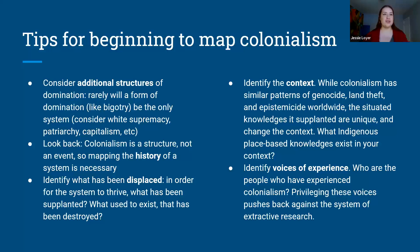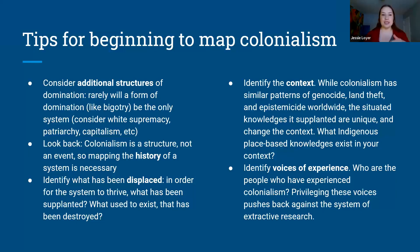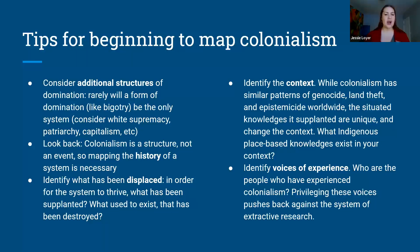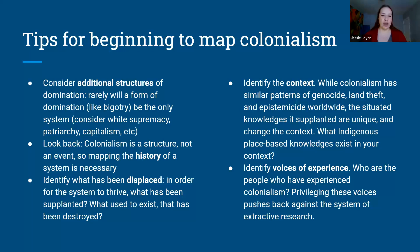The third tip is thinking about what has been displaced. Colonialism in large part is a process of displacing epistemologies — replacing the ways that we understand the world, replacing situated knowledges. In order for the system you've identified to thrive, what has been destroyed? What used to exist? Really we're asking: what had to die for this to thrive? Even when thinking about systems that are quite benevolent, like a healthcare system, we can ask what existed before — what was the process of healthcare before our particular example of hospitals, medicenters, and individual doctors? Think about that process of displacement and what has been destroyed in that process.